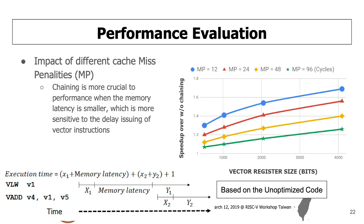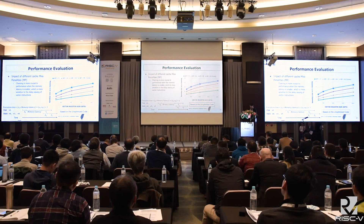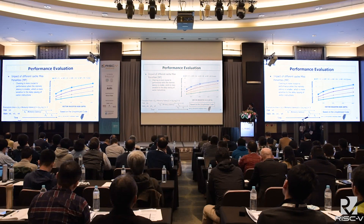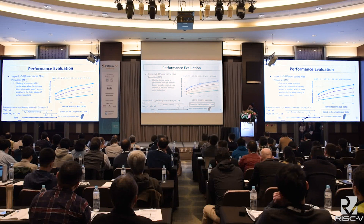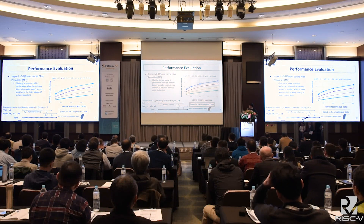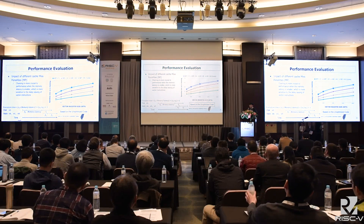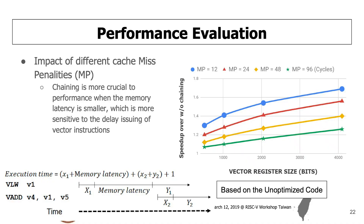Next, we explore the impact of different cache miss penalties on chaining. We can see that when the miss penalty is smaller, the impact of chaining is greater. This can be explained by the following example: if a code sequence has a vector load and a vector add where vector add depends on vector load, the execution time will be X1 plus memory latency plus X2 plus Y2 plus 1. When memory latency is small, changing the vector register size will have a greater impact on execution time.